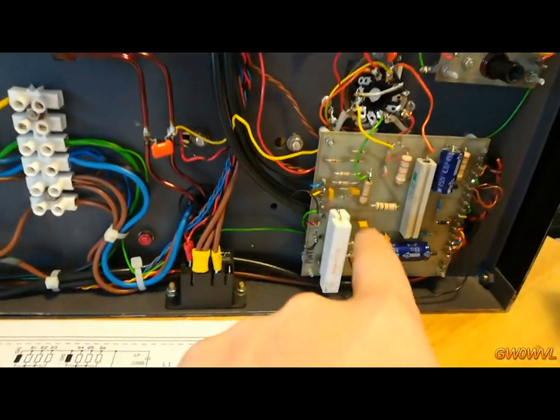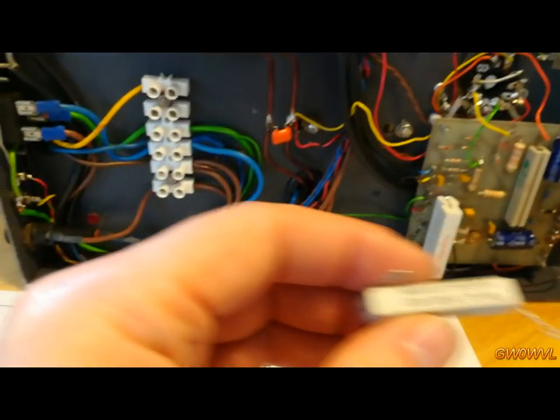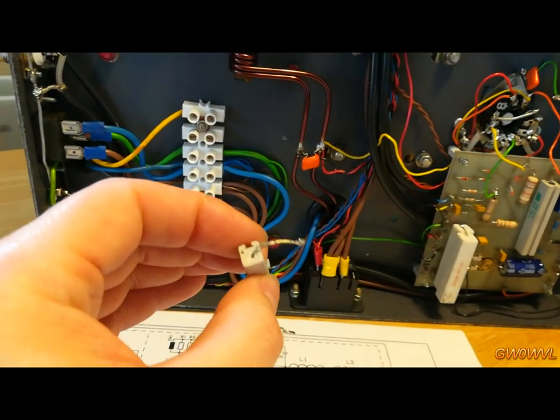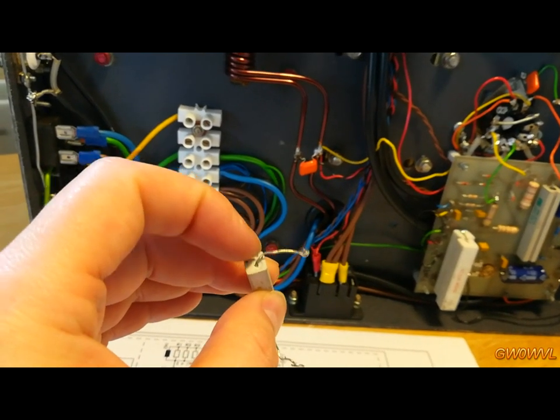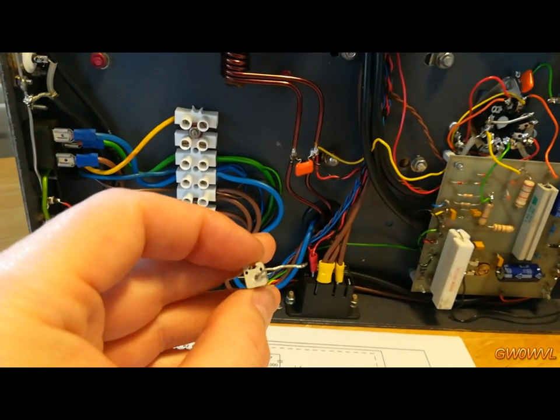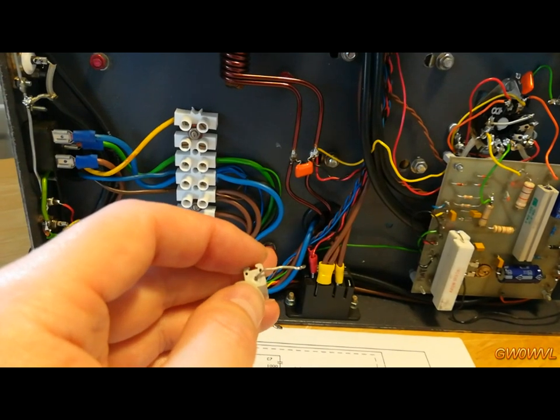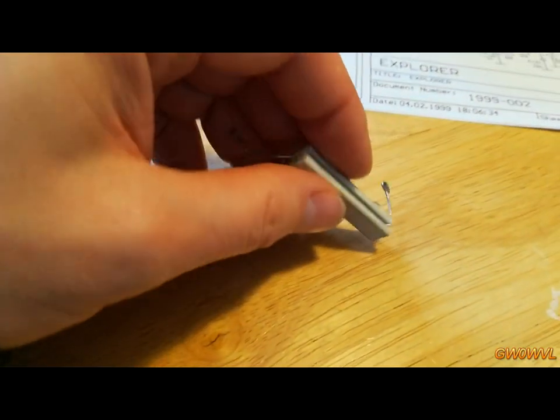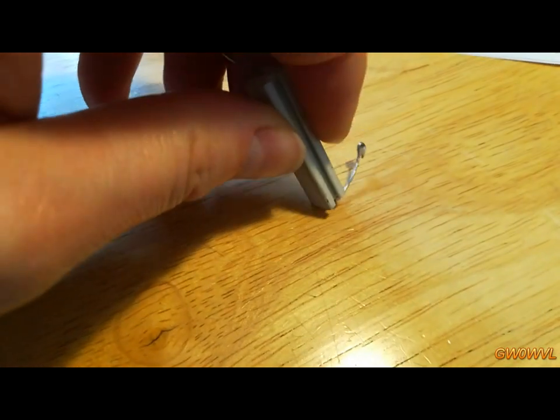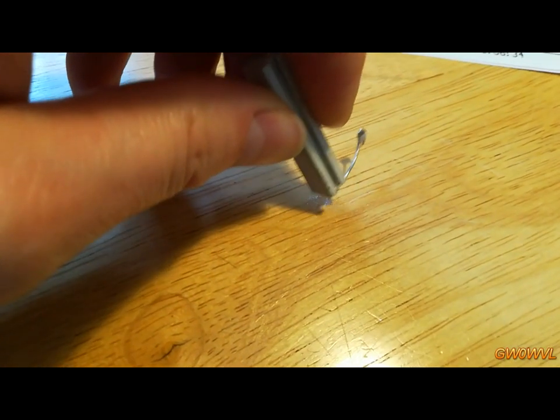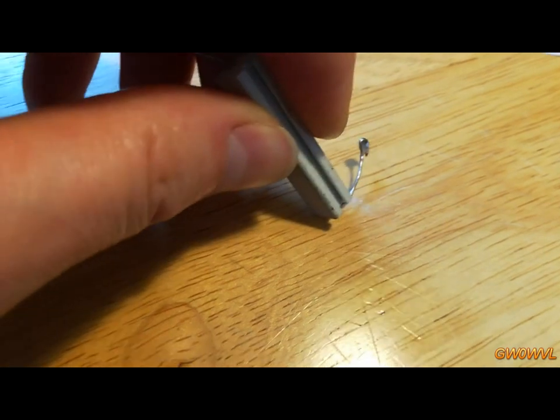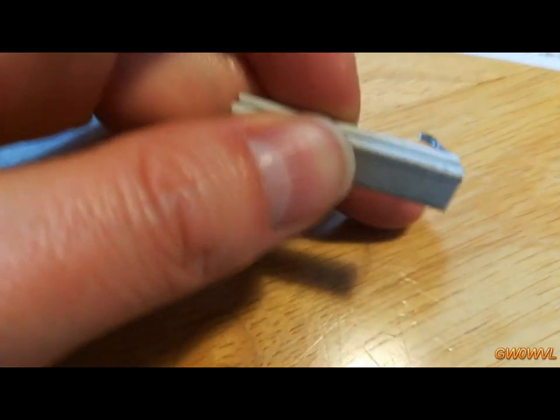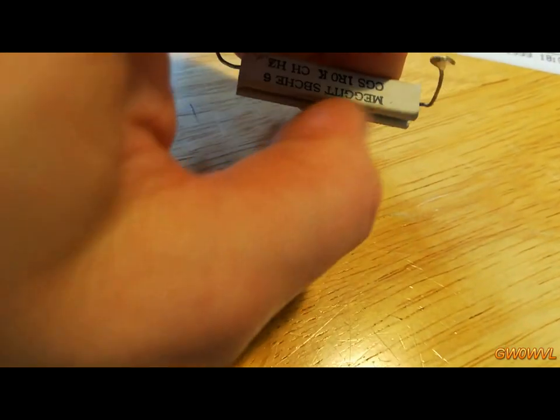I also had a slight issue with the one ohm resistor here. Even though it still shows in spec, the ceramic insides had started to come out. Yeah, you can see it there. It's like a powder. The insides had started to come out, so I thought I'll replace that as well.